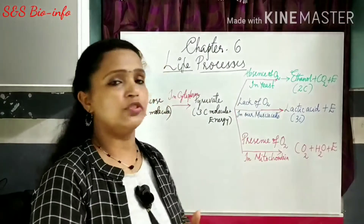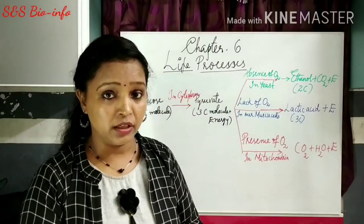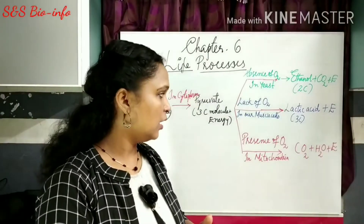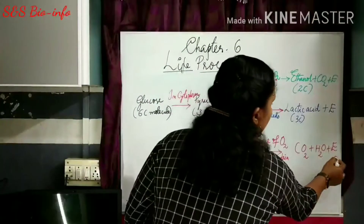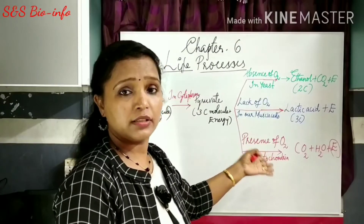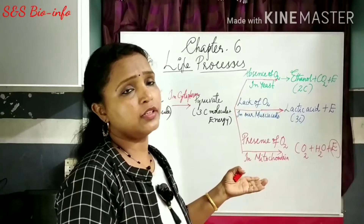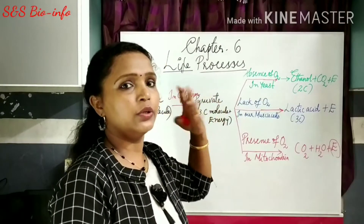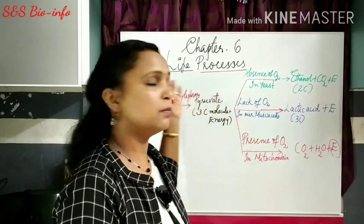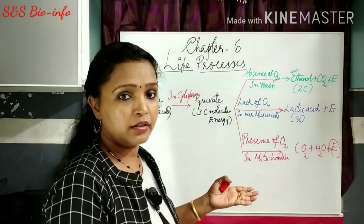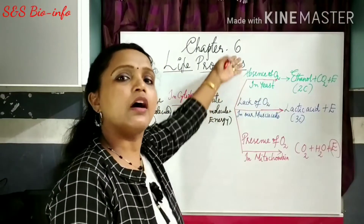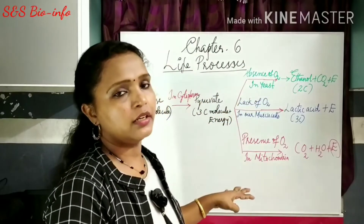In the presence of oxygen, whenever the body cells get sufficient oxygen, aerobic respiration takes place in every cell. In the mitochondria, a large amount of energy is released along with carbon dioxide and water. This carbon dioxide is an excess, unnecessary product that is exhaled during our breathing process. In all three cases, energy is released by the breakdown of glucose. The actual meaning of respiration is: breakdown of glucose to release energy with or without oxygen.